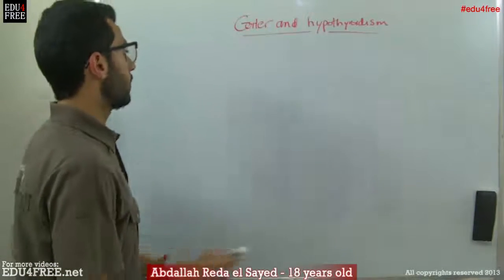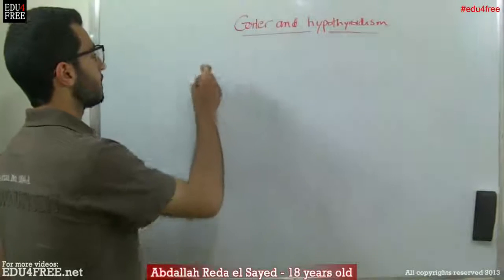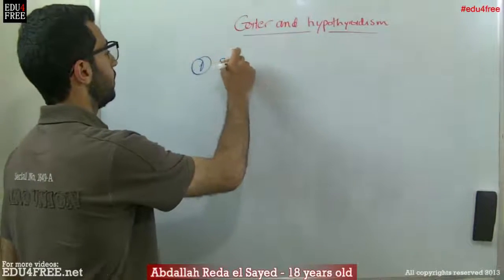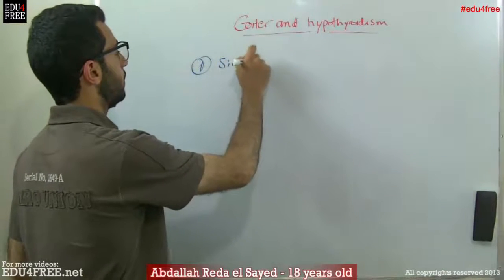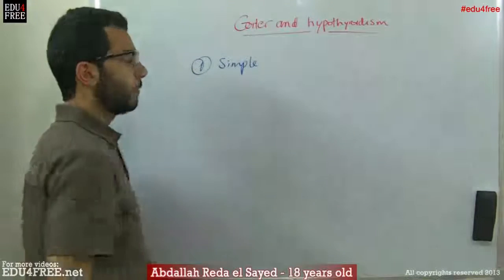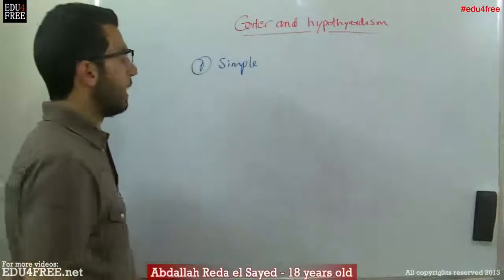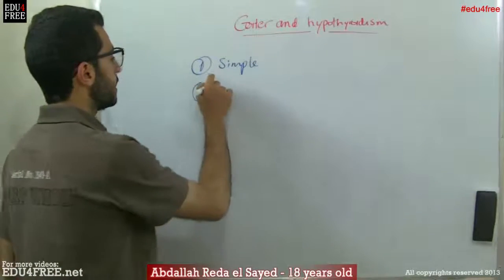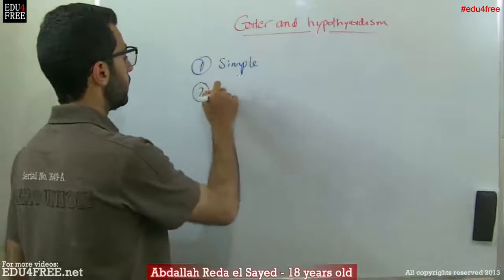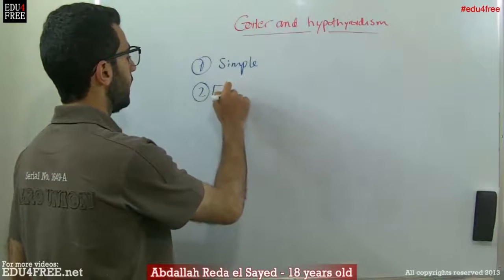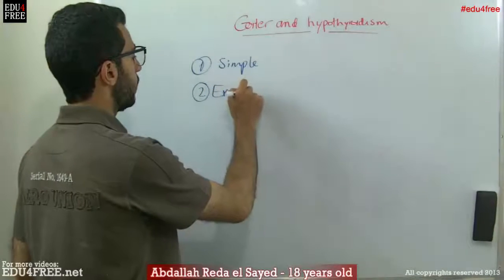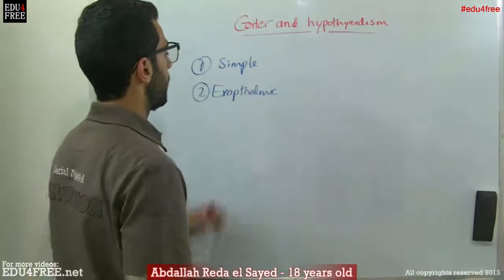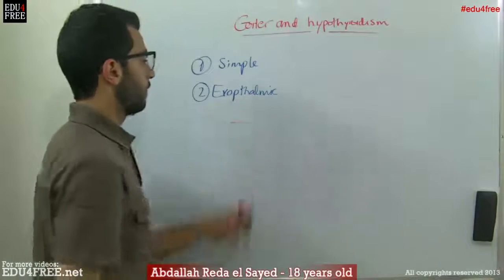First of all, Goiter has two types: the Simple Goiter and another type called the Exophthalmic Goiter.